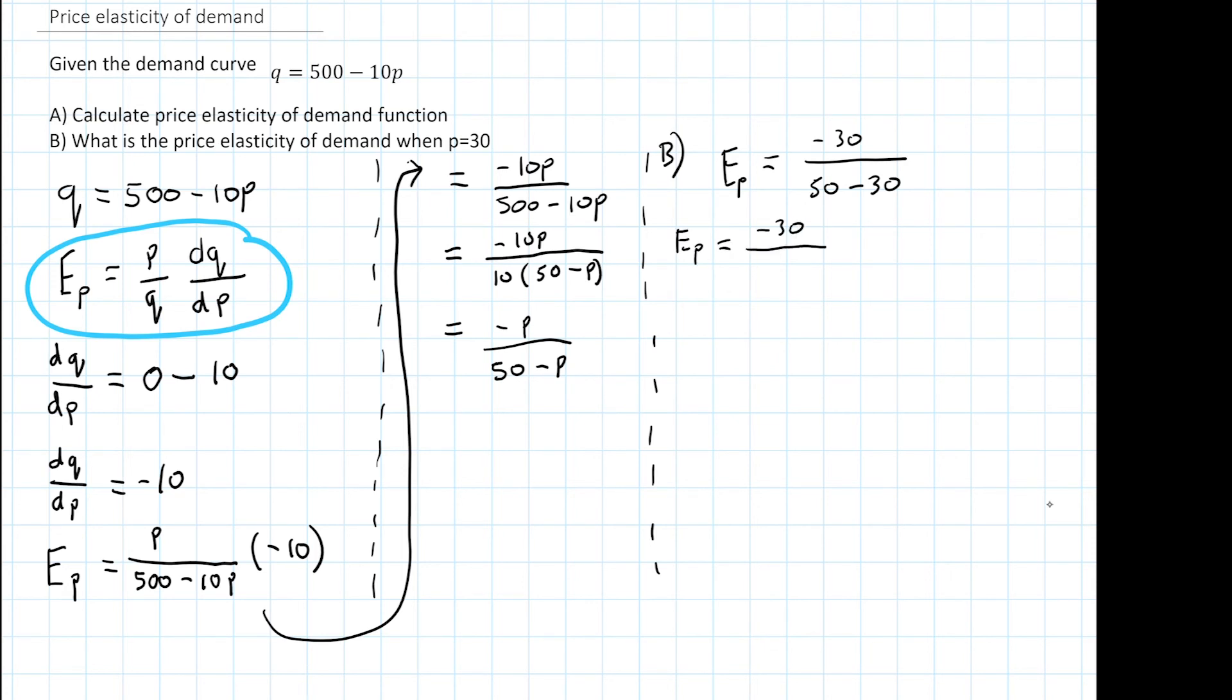Ep equals minus 30 over 20, which of course equals minus 1.5. So when p equals 30, we know the price elasticity of demand equals minus 1.5.